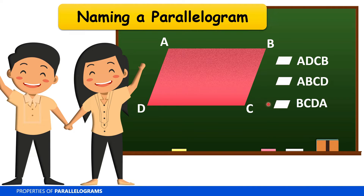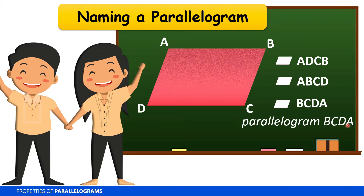So another name for this is parallelogram BCDA, or we could use the word 'parallelogram' before our four vertices. So we have parallelogram BCDA. Again, we should use consecutive vertices. So it should not be parallelogram BDCA — it should be any arrangement as long as the vertices are in consecutive order.